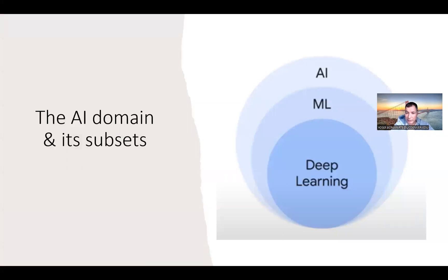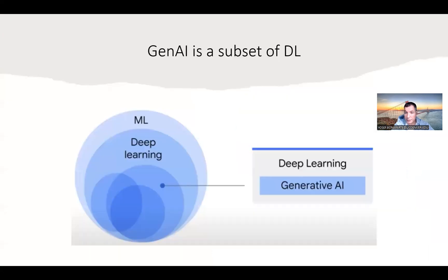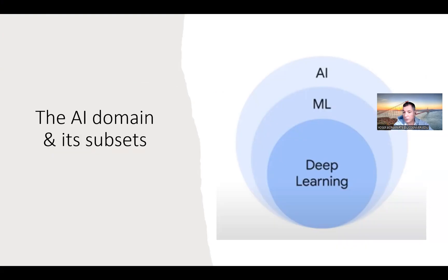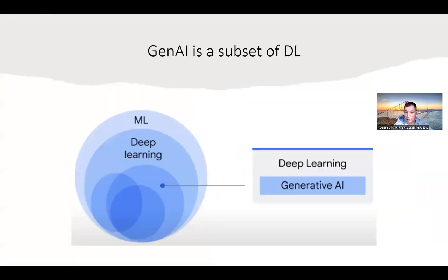AI is a big field. The subfields include machine learning and deep learning, which is a subset of machine learning. Generative AI is a subset of deep learning. So machine learning is the big field, deep learning sits inside it, and generative AI is one of those. When you hear machine learning or deep learning, it's a subset of AI — that's all you need to know.